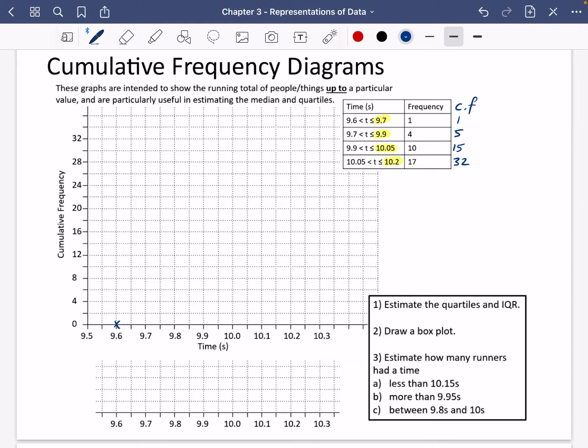So we're going to start at 9.6 because that's the lower boundary. We're going to do 9.7 with one, so that's going to be halfway up at this point here. We're going to do 9.9 with five.